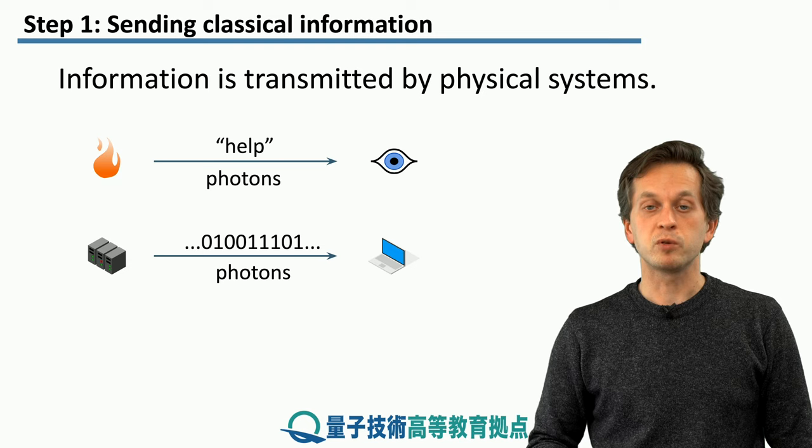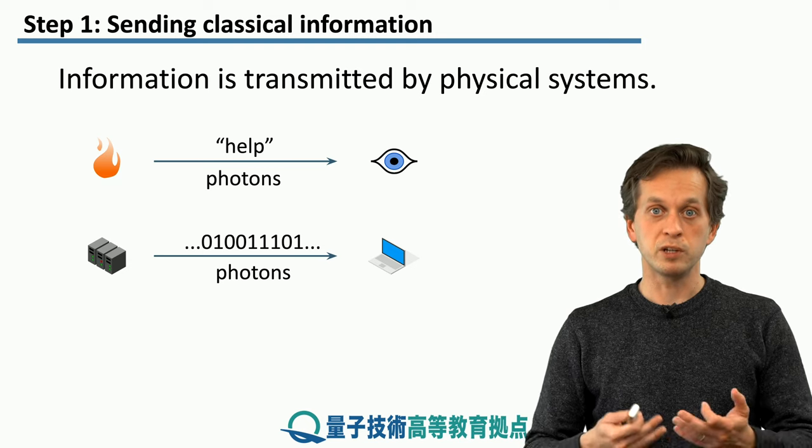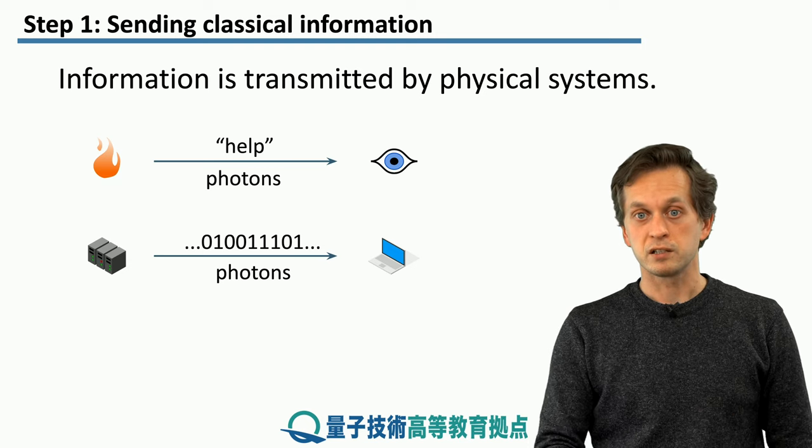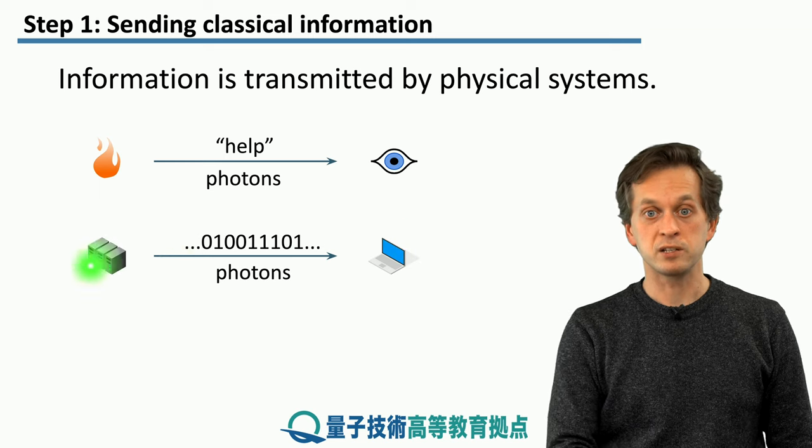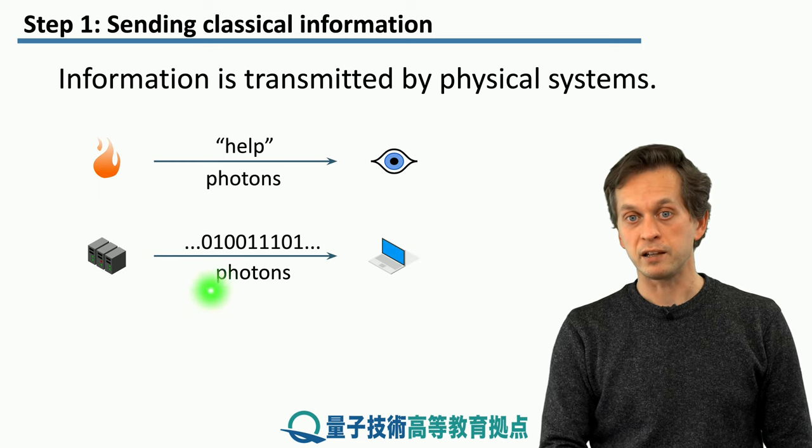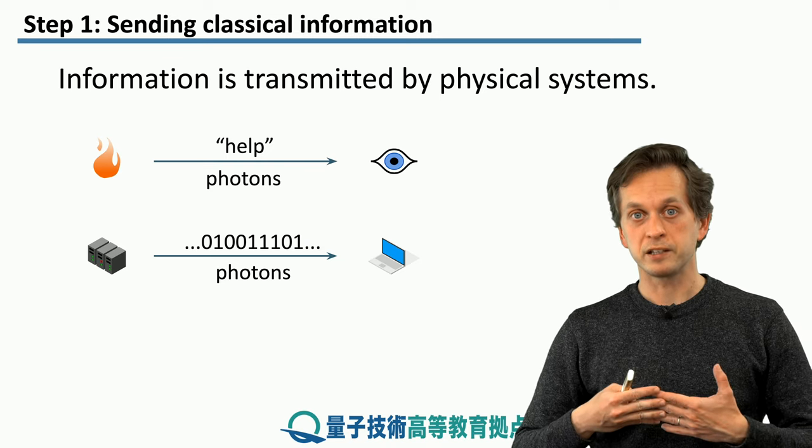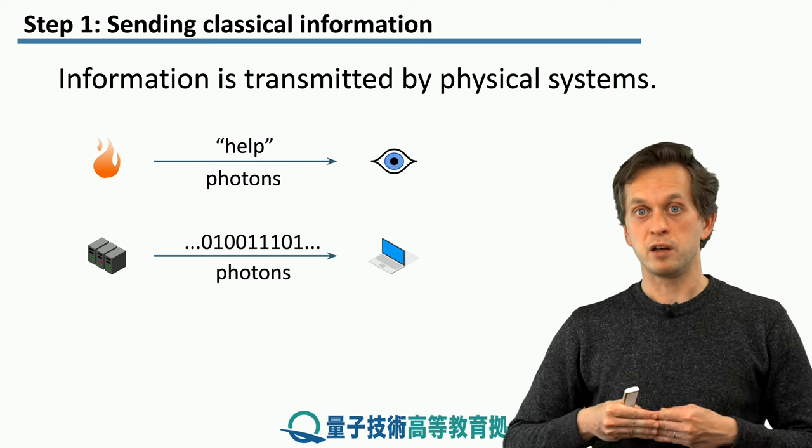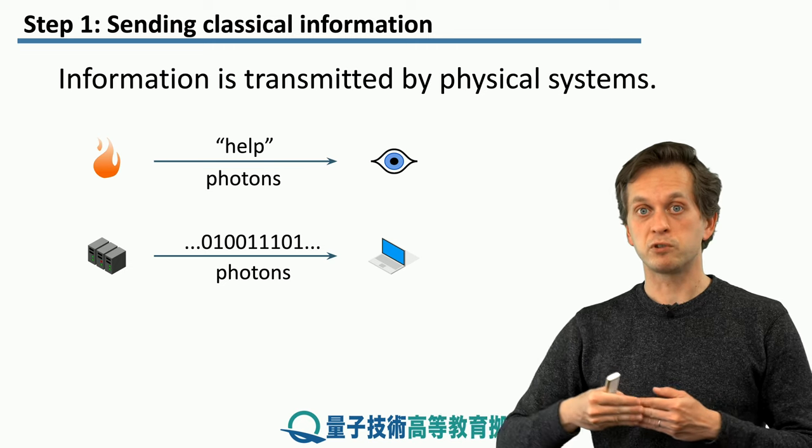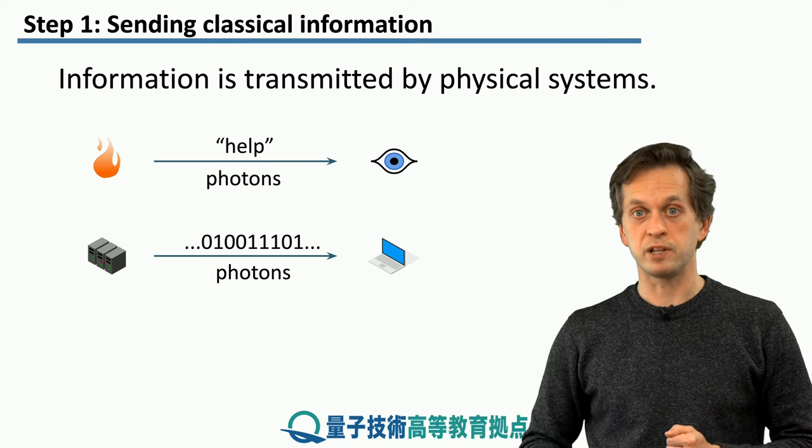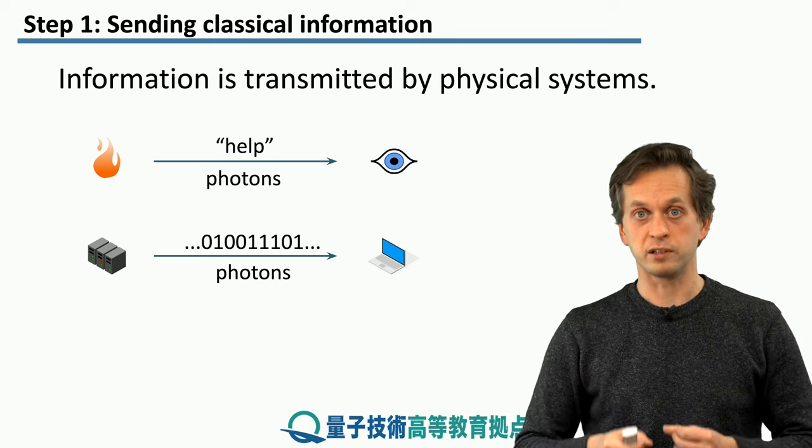In modern times, we want to download some data or communicate over the classical internet. The message is a bit string, and it is carried by photons in optical fibers. In classical networks, if we want to transmit some message, we have to transmit the physical system itself that is encoding the message.